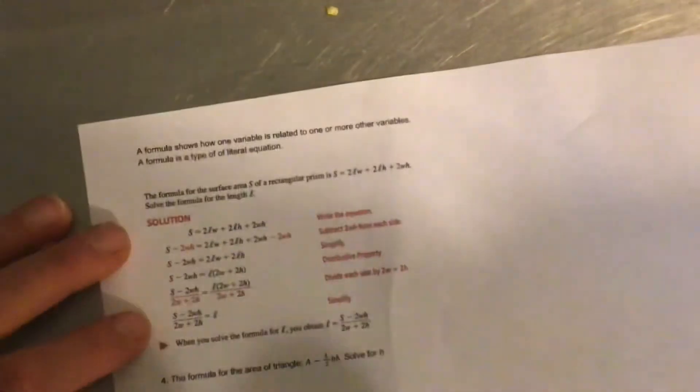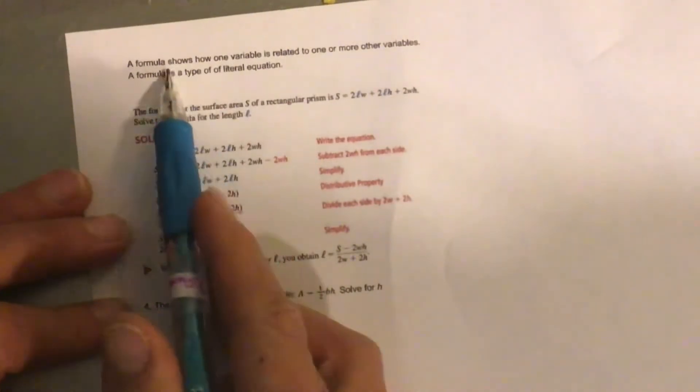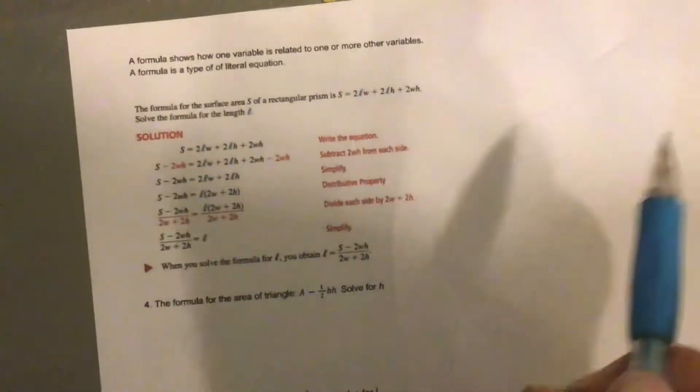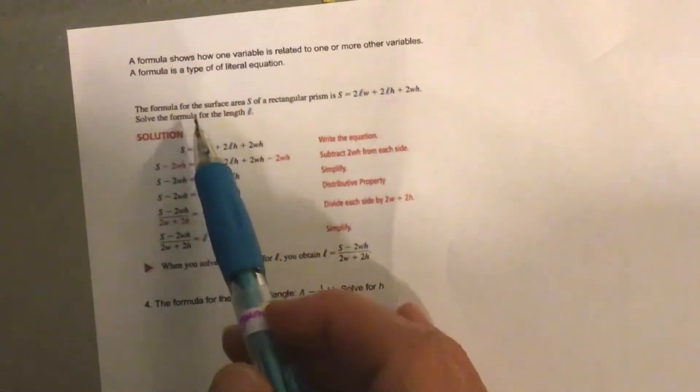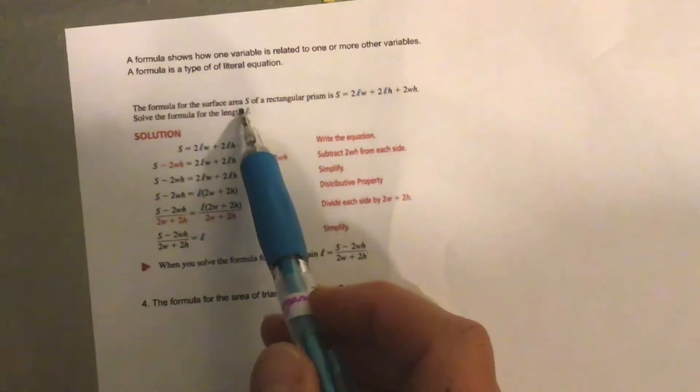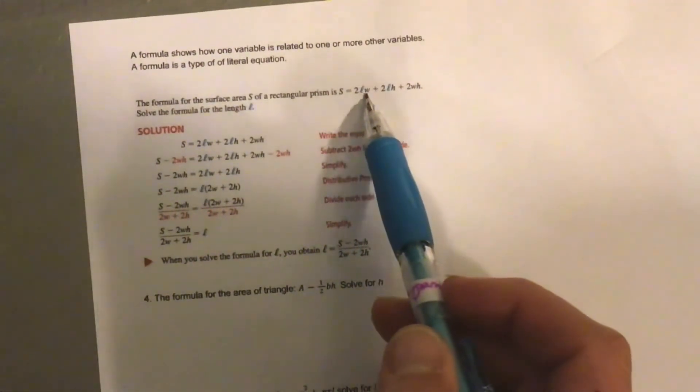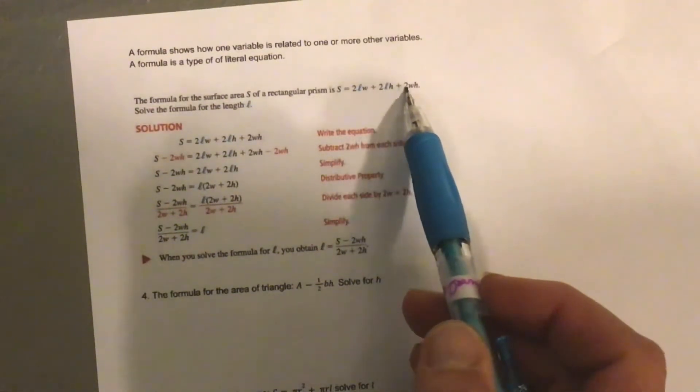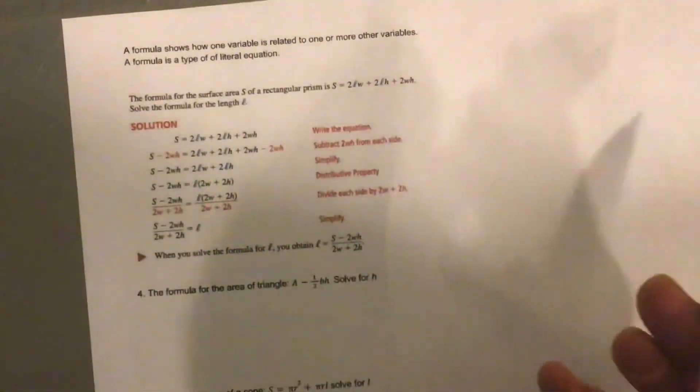All right. So here's the next one. So now we've got a formula that shows how one variable is related to one or more other variables. A formula is a type of literal equation. So a formula for the surface area S of a rectangular prism is S equals 2 times L times W plus 2 times length times height plus 2 times width times height. And solve the formula for L.